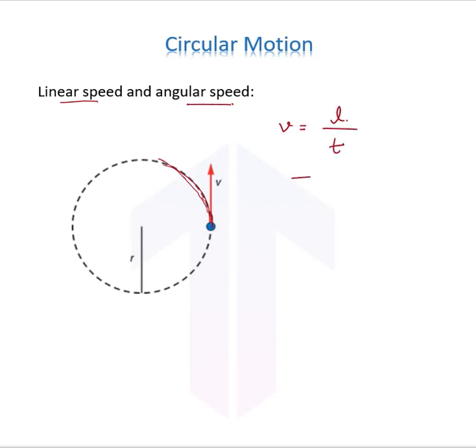In a time period capital T, the length of the arc has to be the total circumference 2πr. Therefore, the linear speed standard formula is 2πr upon T.